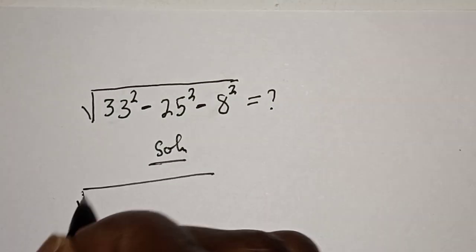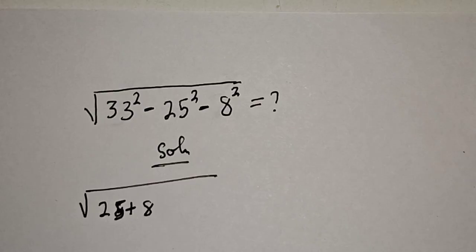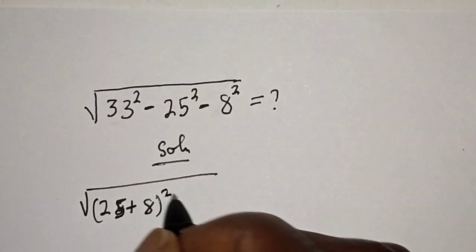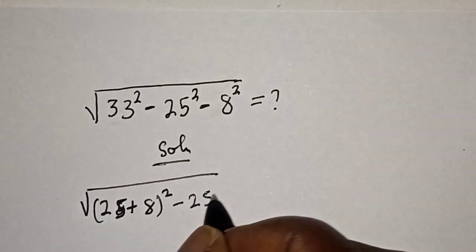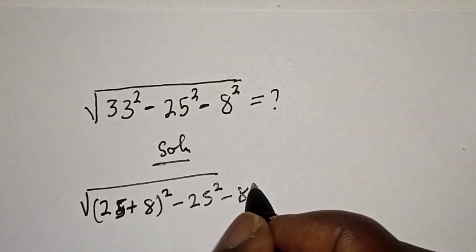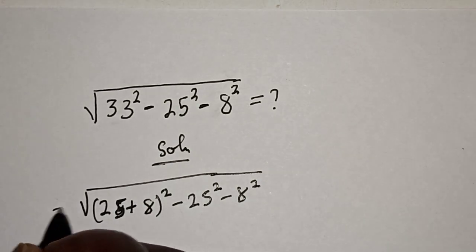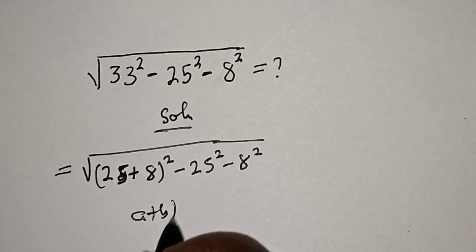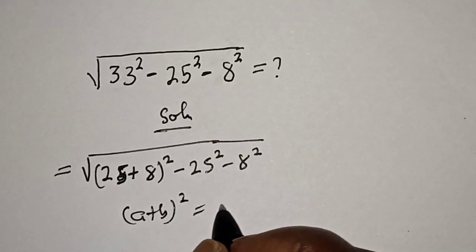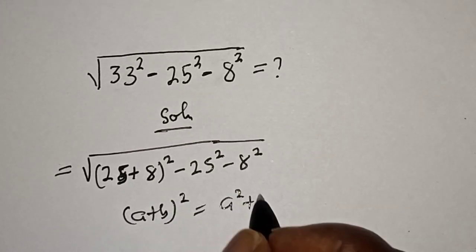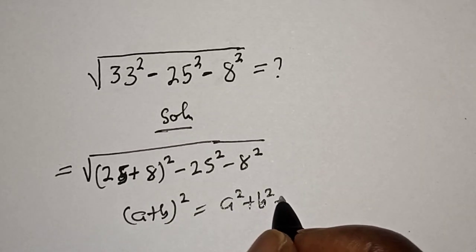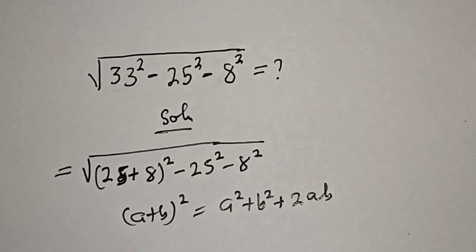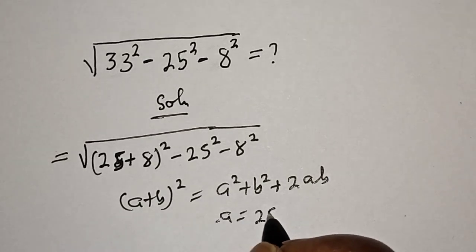We note that 33 is equal to 25 plus 8, so we rewrite this as square root of (25 plus 8) squared minus 25 squared minus 8 squared. Take note that (a plus b) squared is equal to a squared plus b squared plus 2ab, where a is equal to 25.